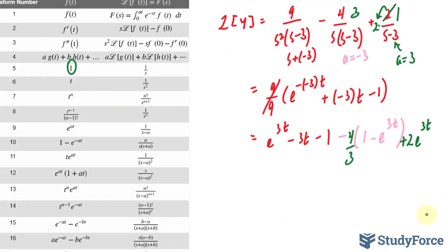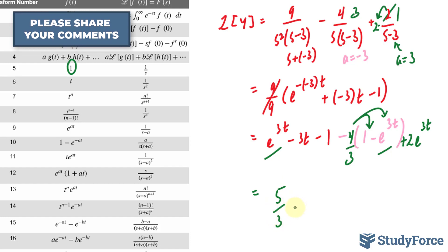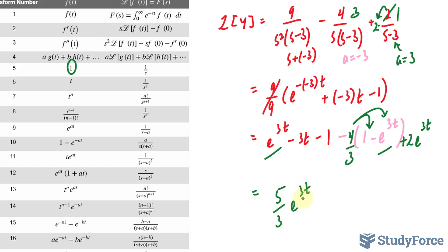Let's see if we can clean this up. If I expand this −4/3 into these two terms, then I'll have like terms. And the −4/3 and the −1 will come together. This will give us a final answer of 5/3 times e^(3t) − 3t, this term, plus a third.